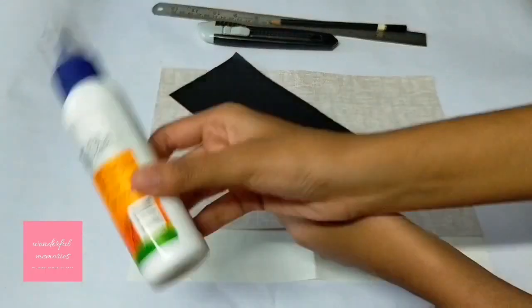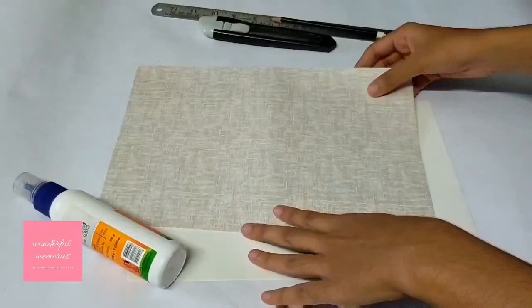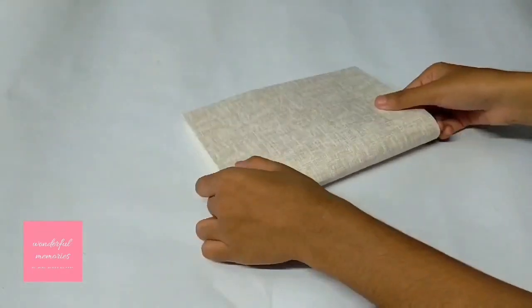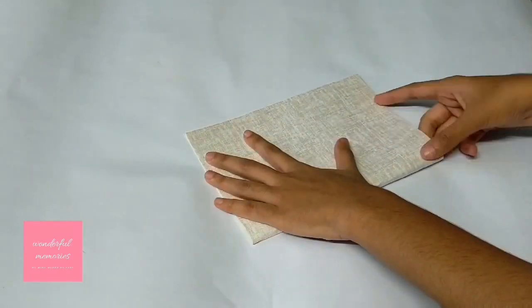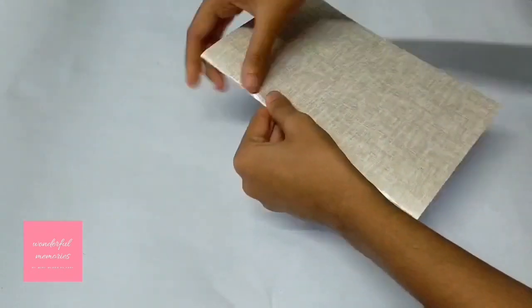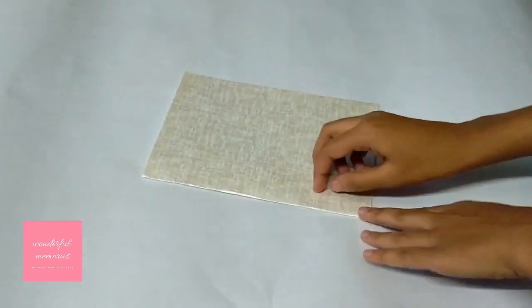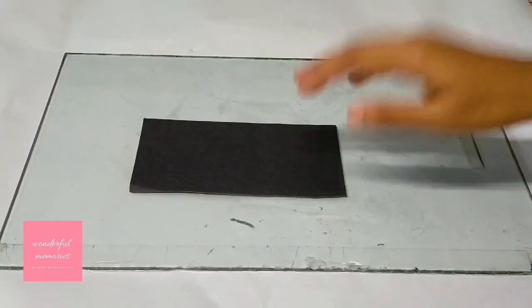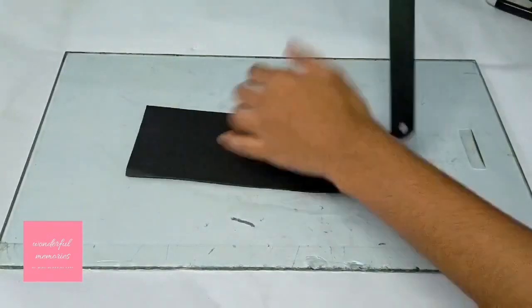Things we need are glue, paper, pattern paper, paper cutter, scale, and pencil. First of all, take a pattern paper and fold it in half. After folding the paper properly, take a piece of black paper and mark the measurements as shown in the video.